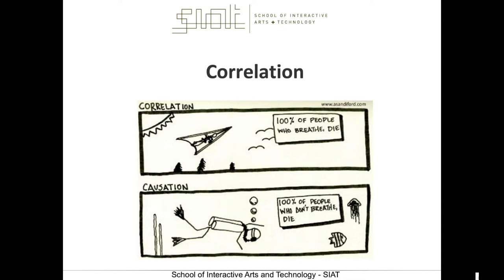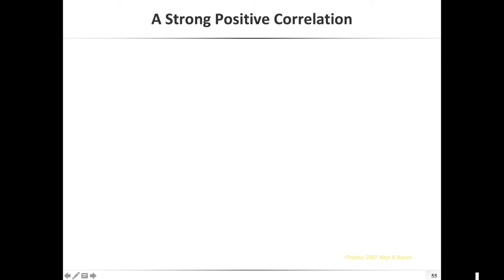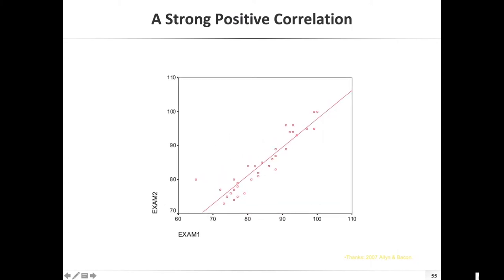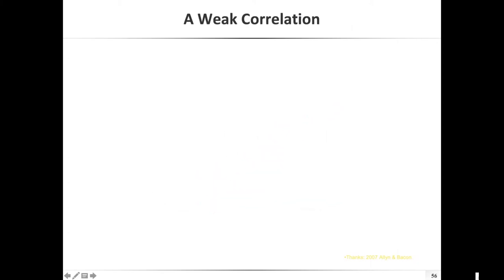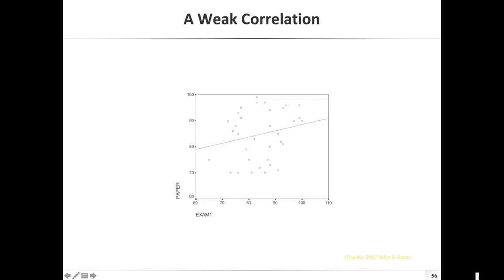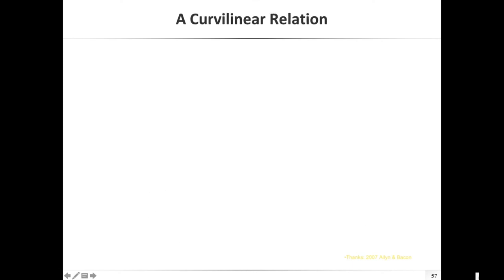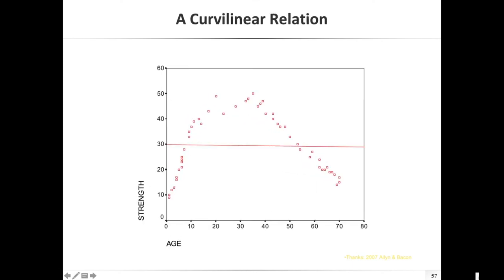You all know the difference between correlation and causation — so how do you visualize that? A strong positive linear correlation looks like a clear diagonal scatter. A weak correlation looks more spread. If you plot the raw data and see something like a curve-linear relation, then you know a normal correlation probably doesn't cut it and you might need to go deeper.